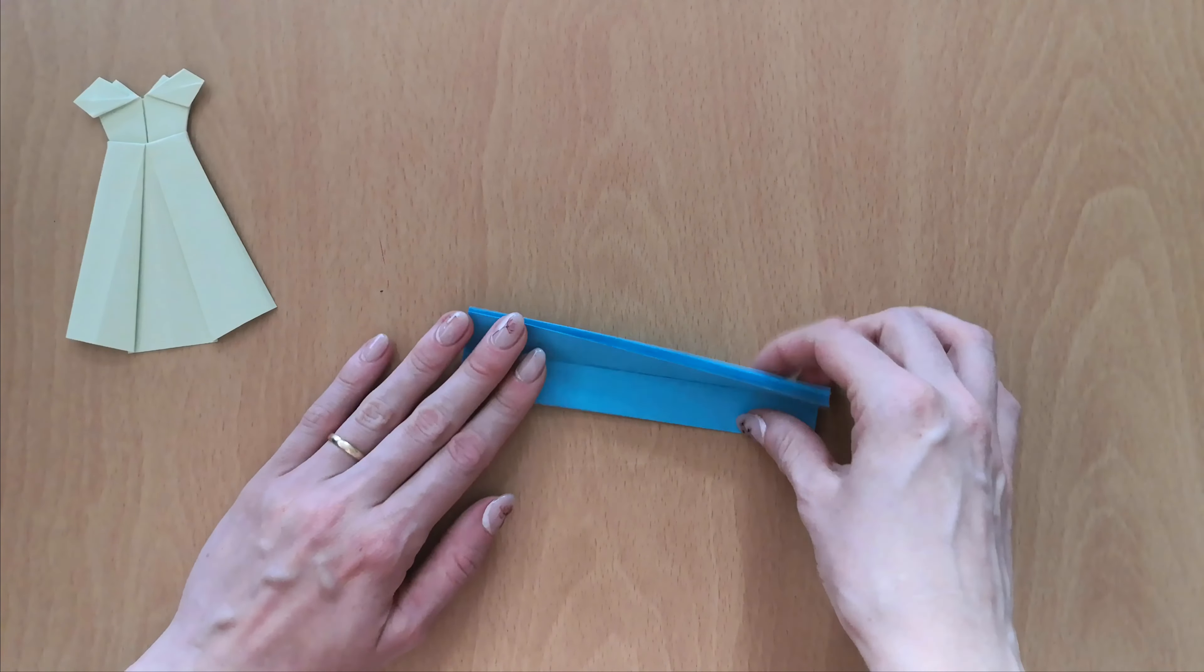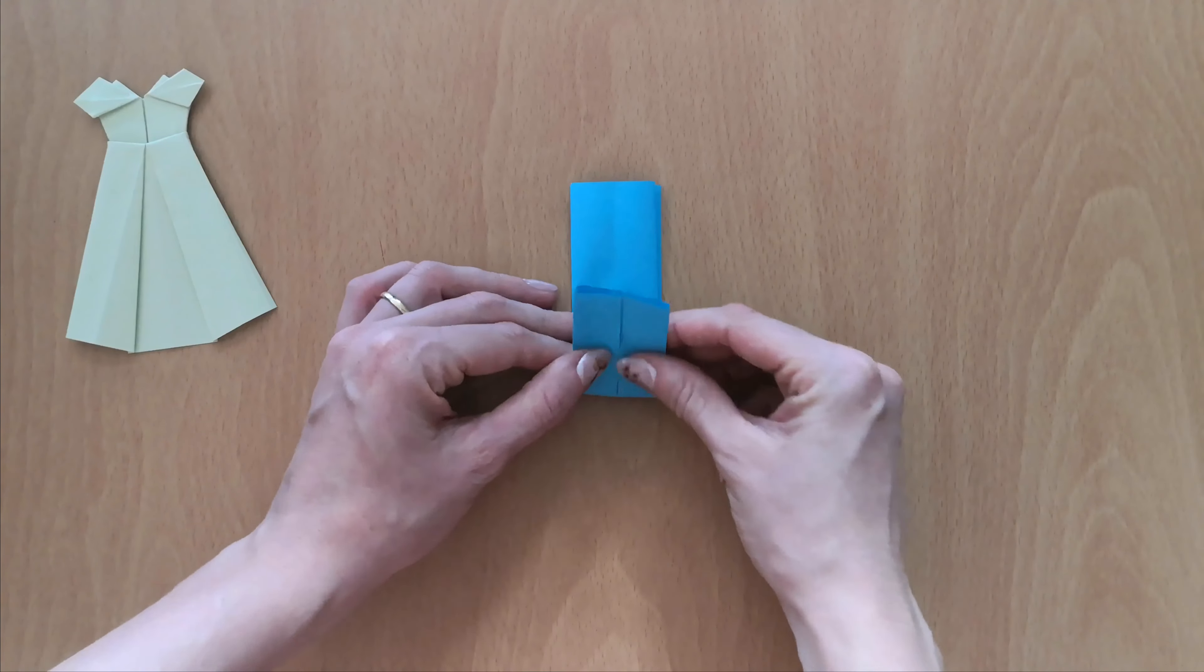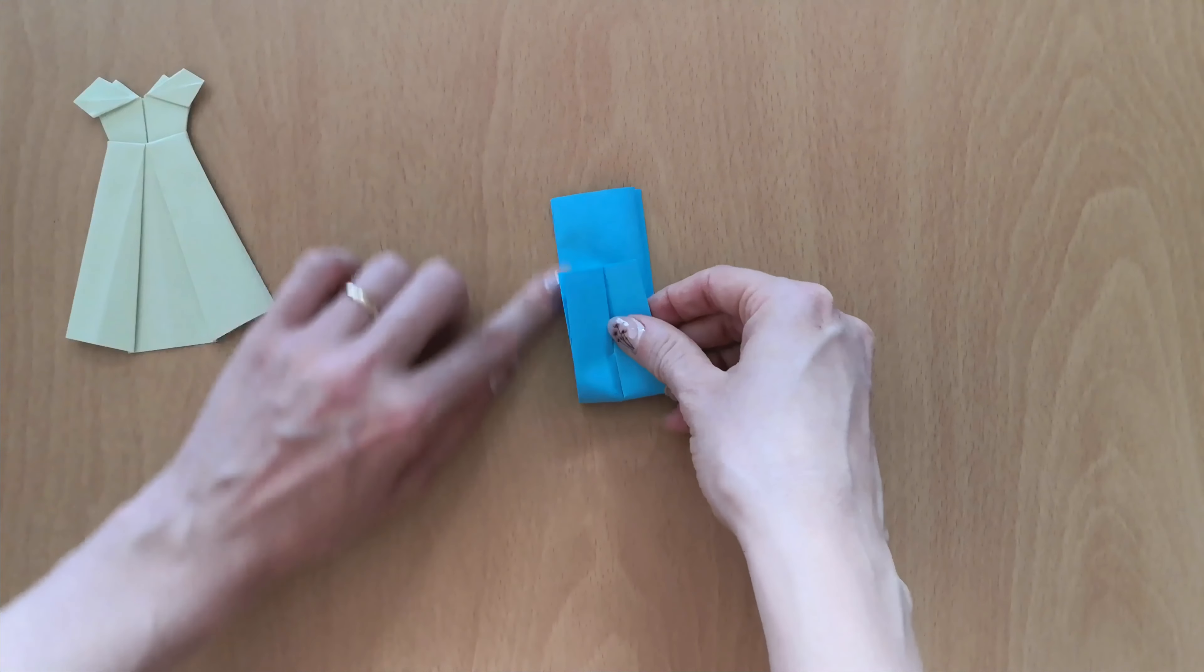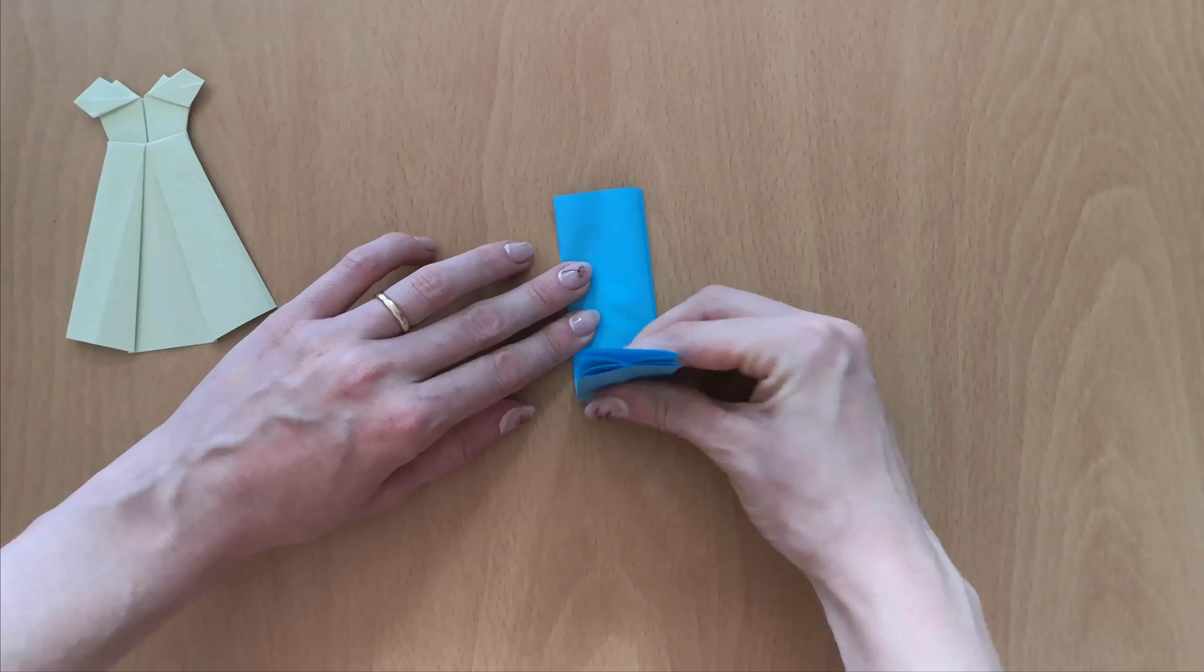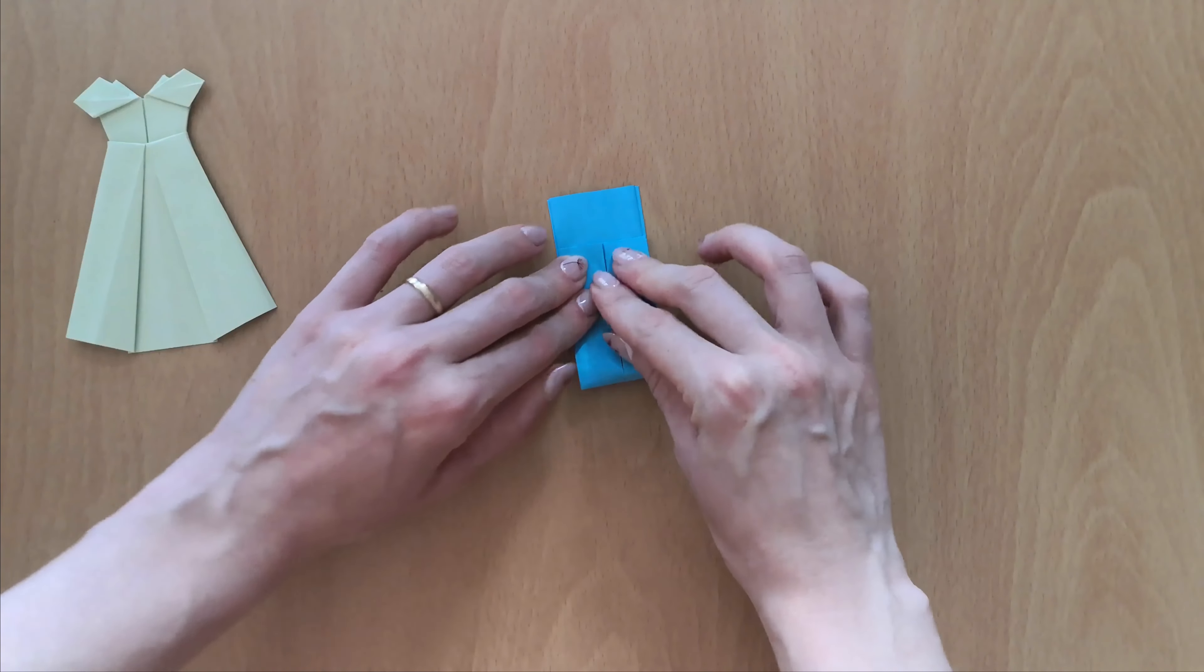In the next step, flip your paper over and bring the bottom side upwards, but leave one to two cm of it. Like so, and just fold it down.